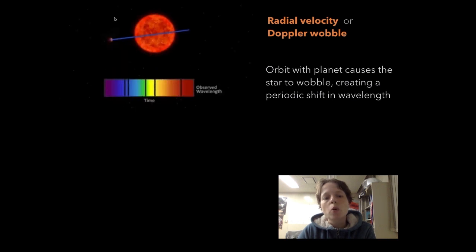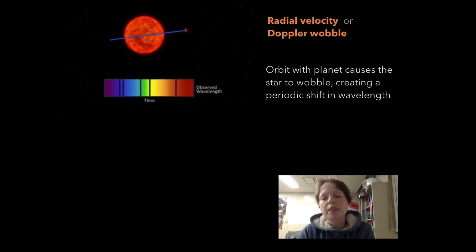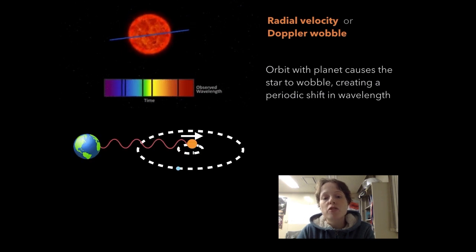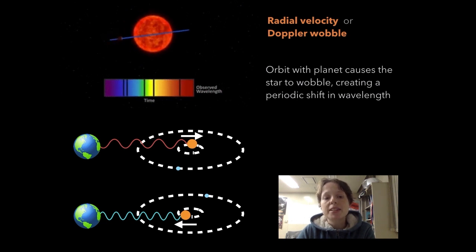This wobble causes the star to move periodically slightly further away and then closer to the Earth. As the star moves slightly from the Earth, its light waves stretch out and redden slightly. Conversely, as the star moves back towards us, the light waves compress and become bluer. This regular shift from red to blue is what astronomers can measure to detect a planet.